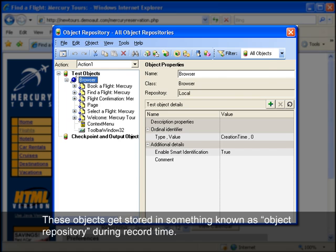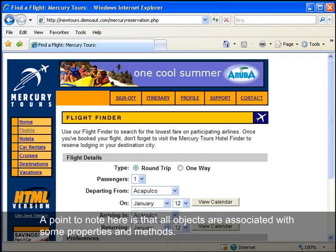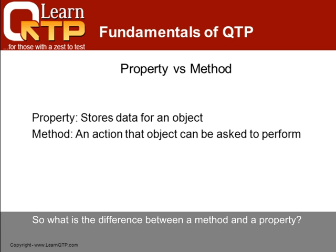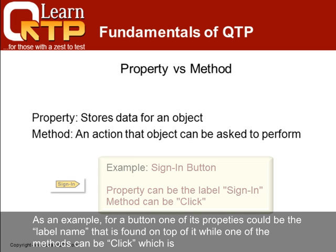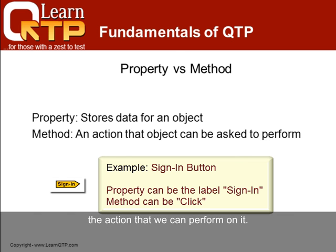A point to note here is that all objects are associated with some properties and methods. So what is the difference between a method and a property? In simple terms, properties store data for an object, and methods are actions an object can be asked to perform. As an example, for a button a property could be the label name found on top of it, while a method can be 'click', which is the action we can perform on it.